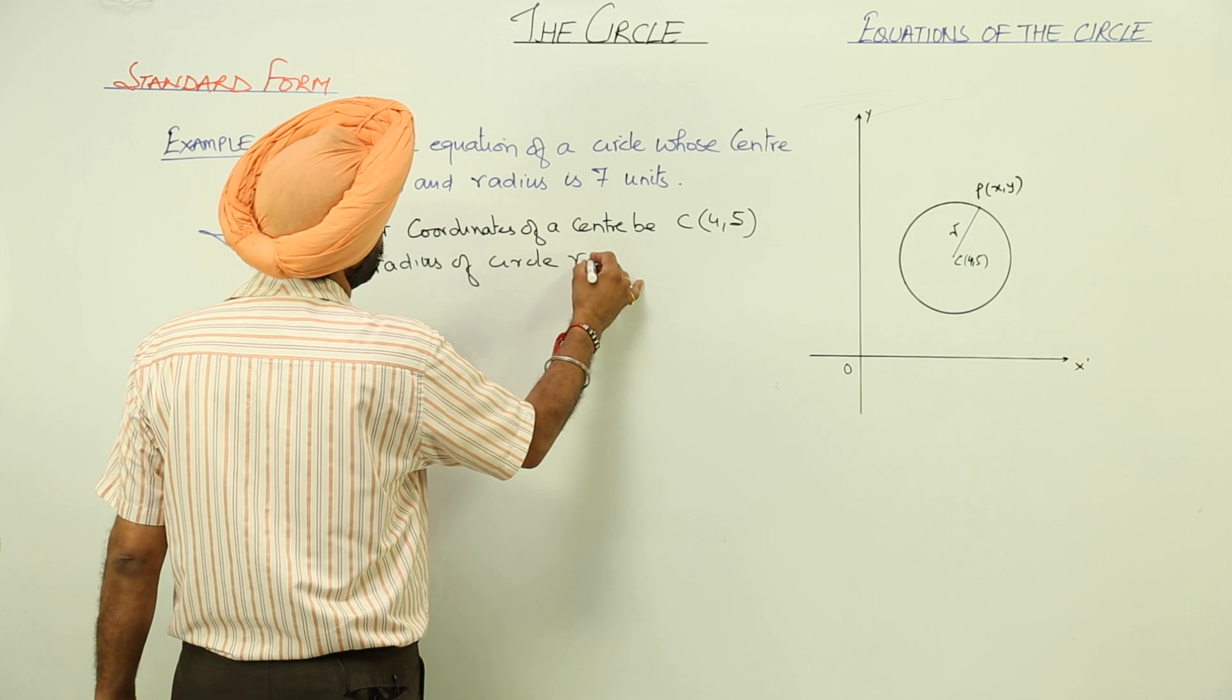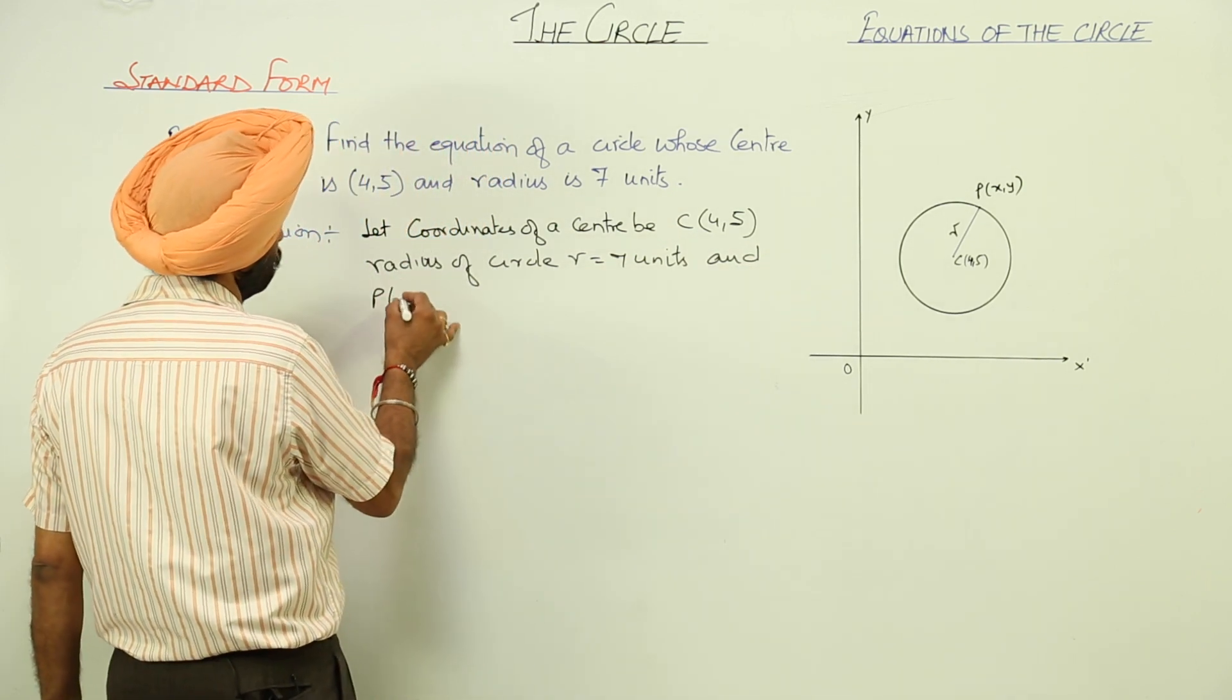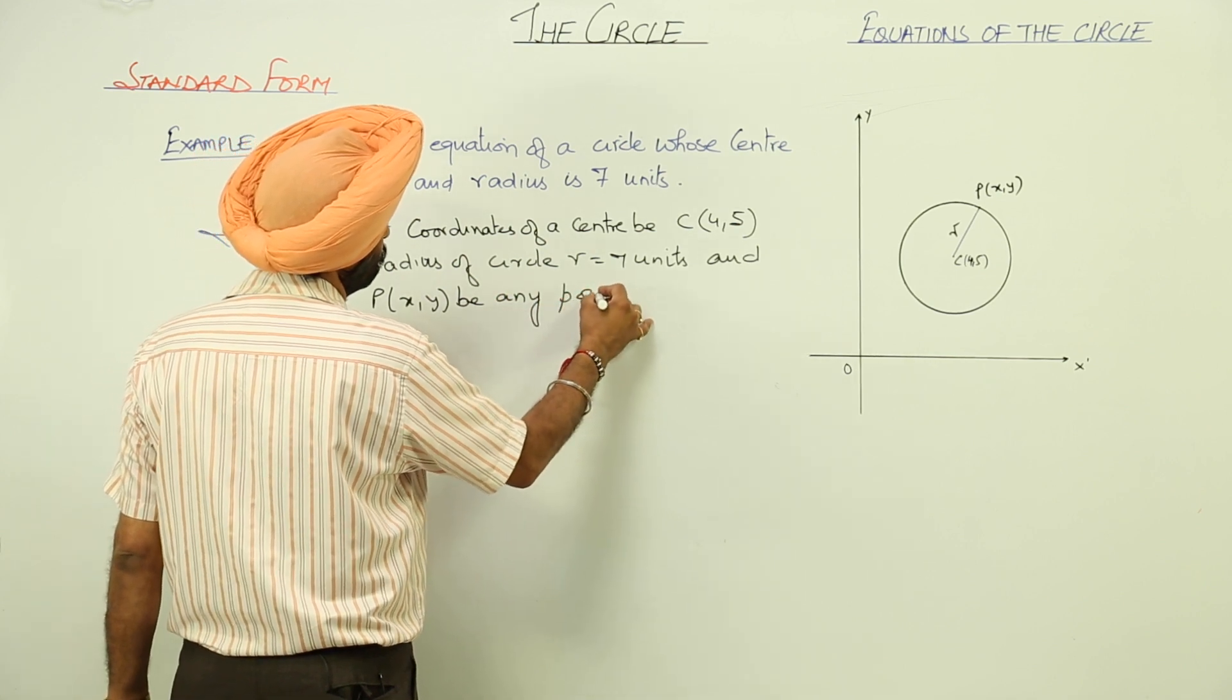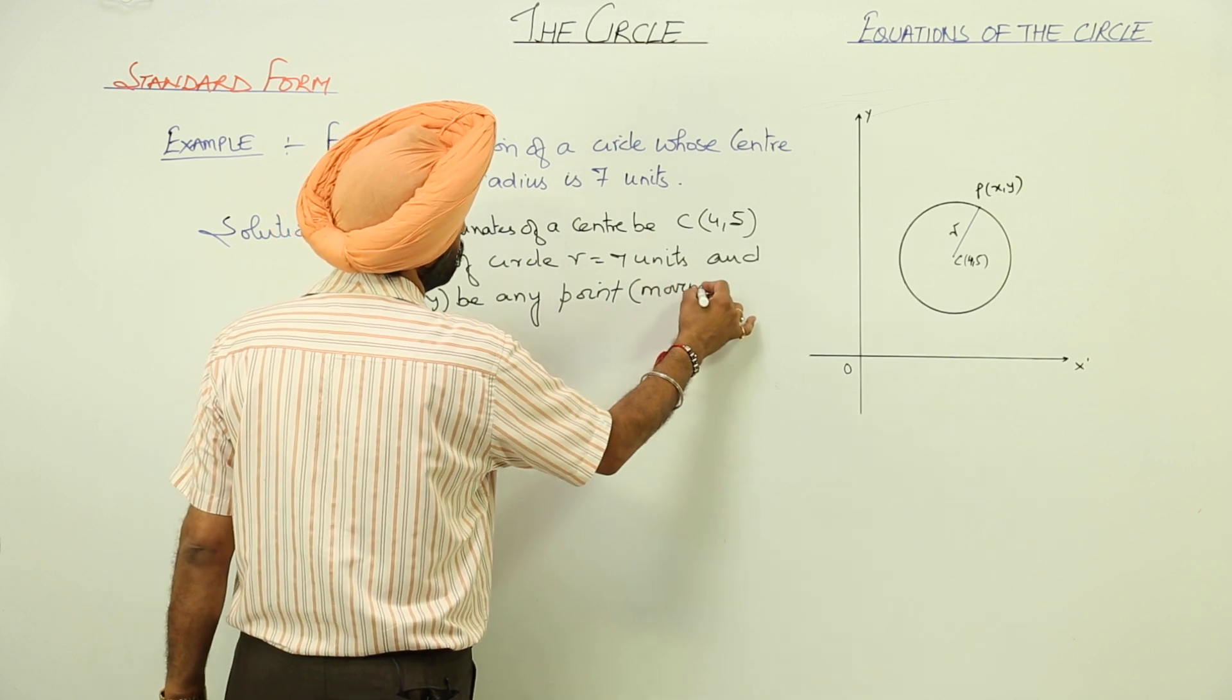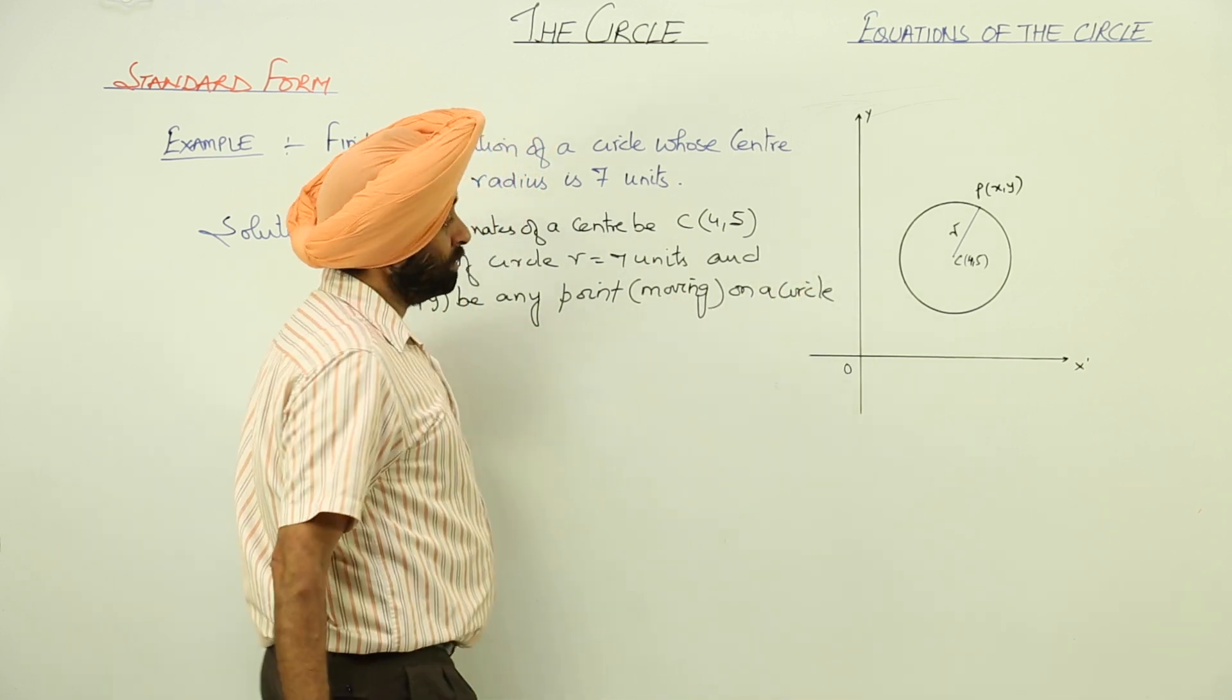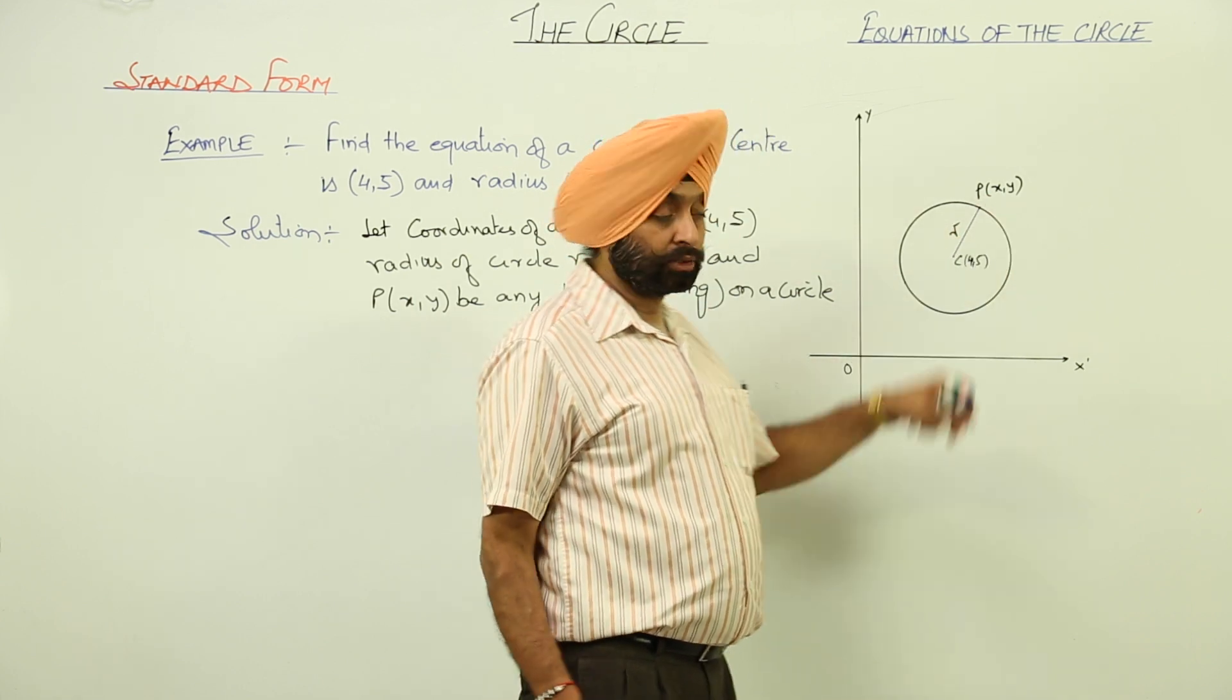Let P(x,y) be any moving point on the circle. In the figure, I have mentioned the center, the moving point, and the radius.